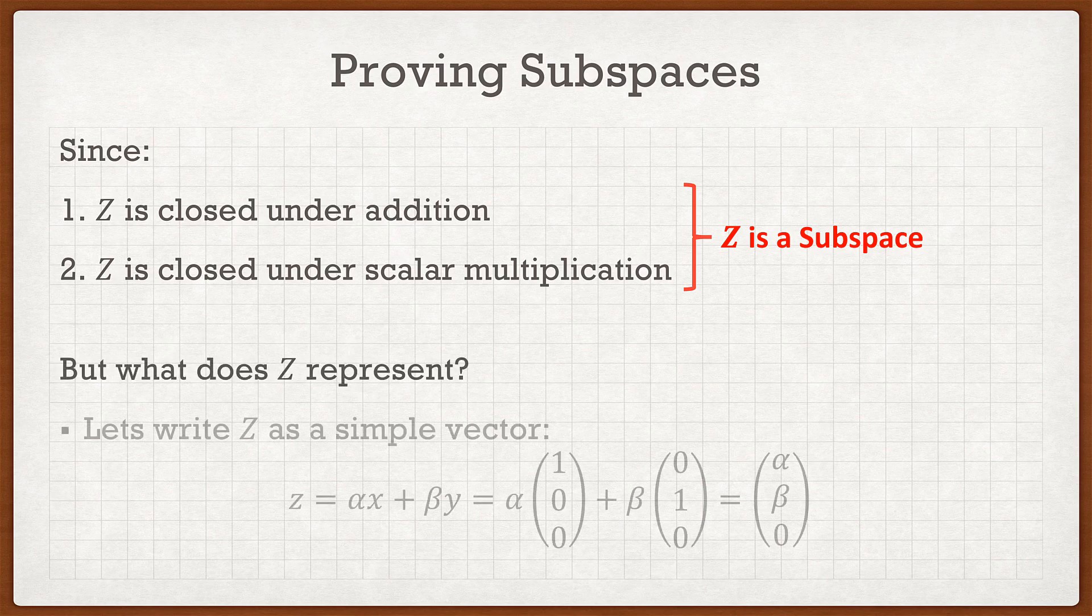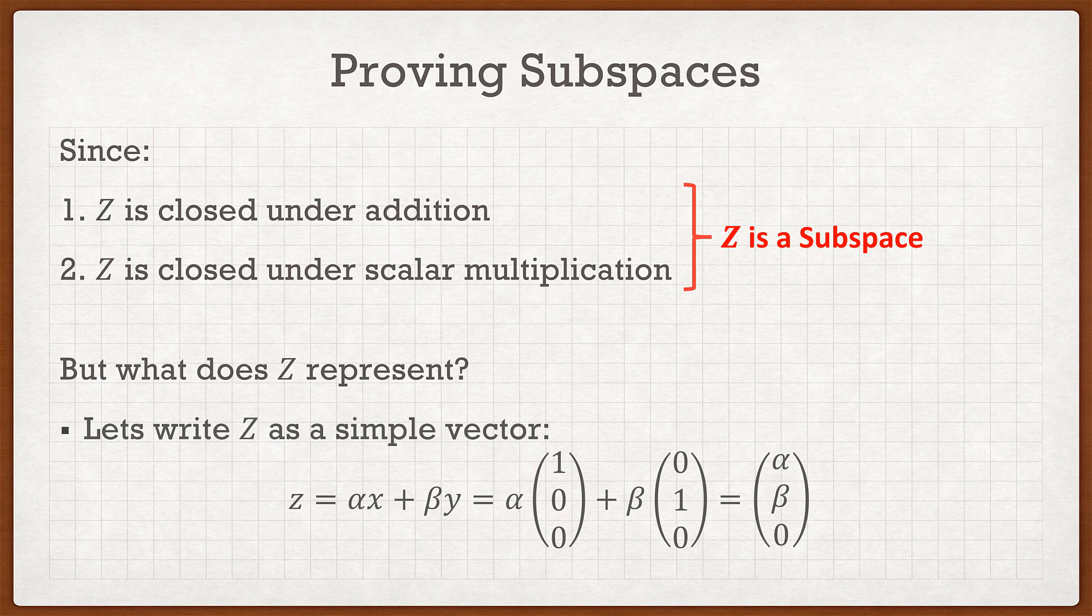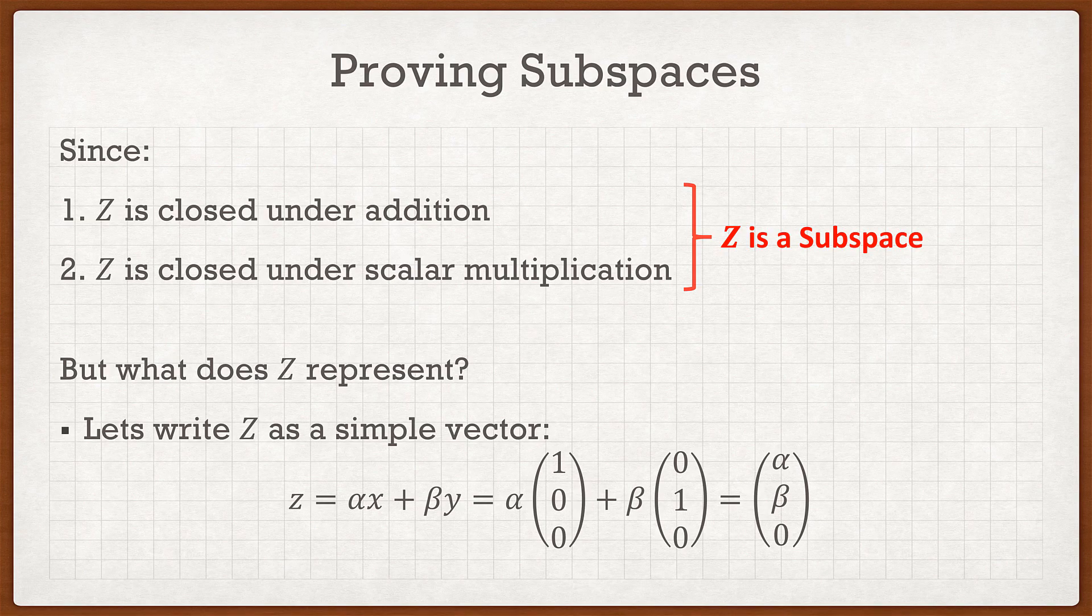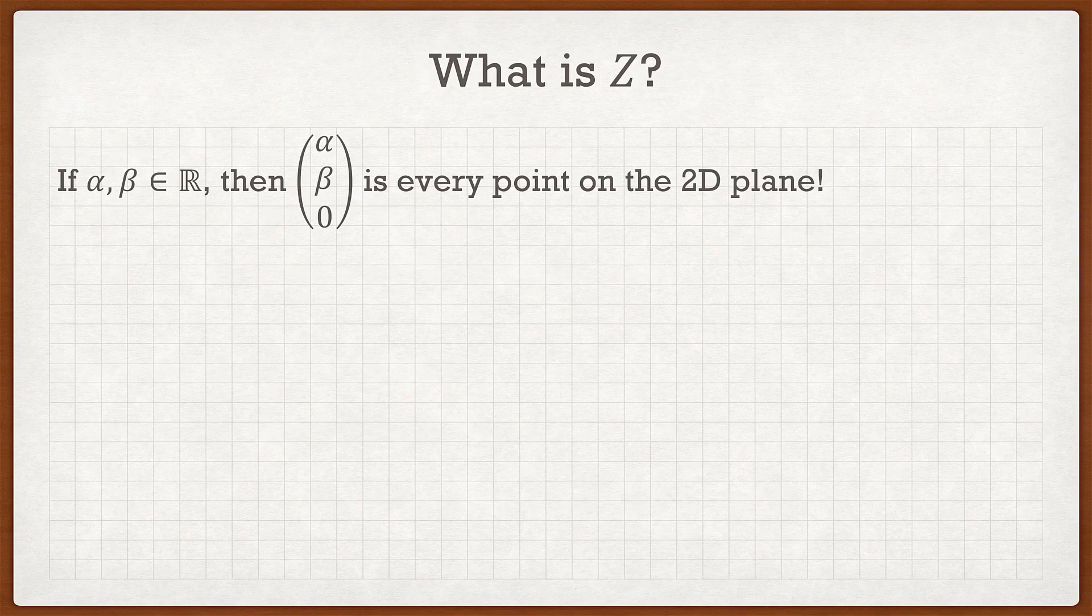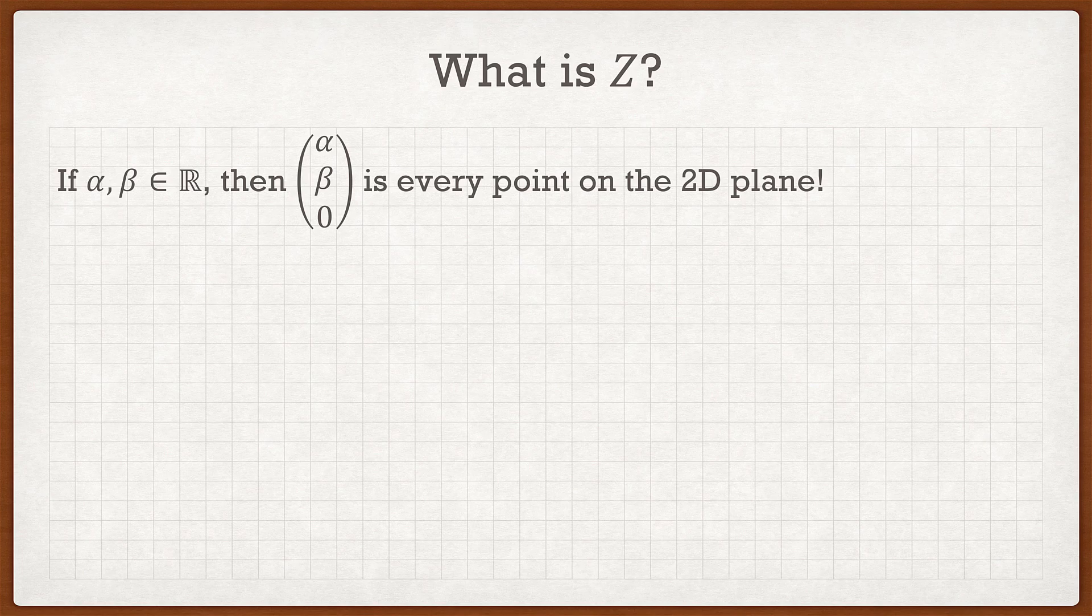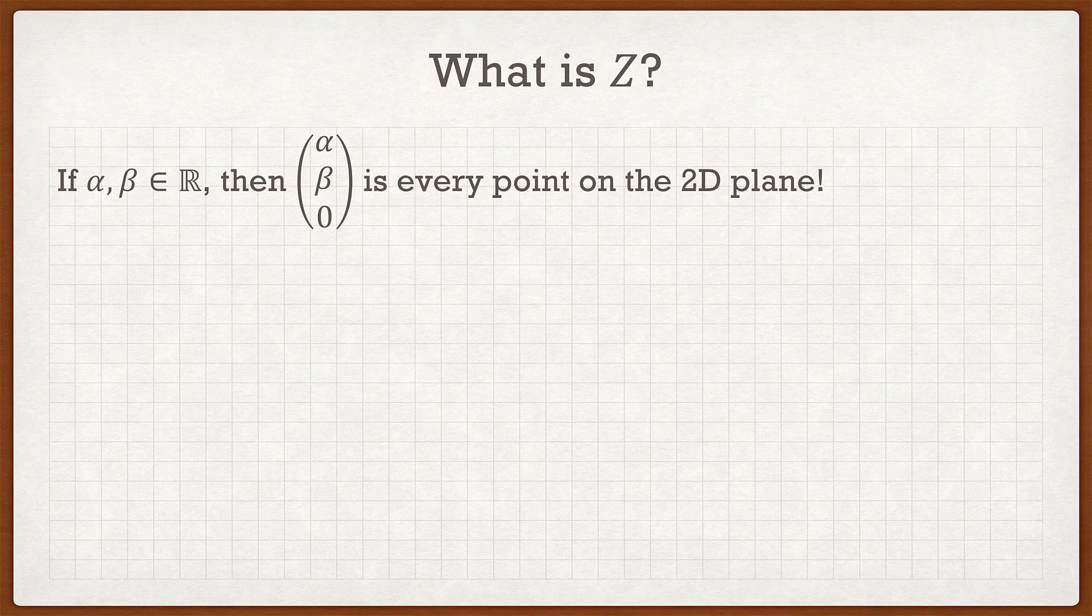But what does z represent? Well let's write it as a simple vector. So if I simplify αx plus βy, in the end I get that it's a vector which is (α, β, 0). And if α and β could be any member of the reals, well then that vector is actually a 2D plane, because it represents all the values of α and β in the e₁ and e₂ direction.